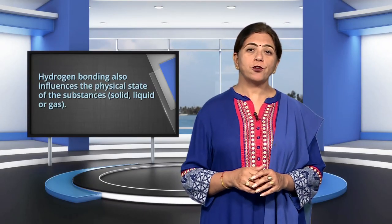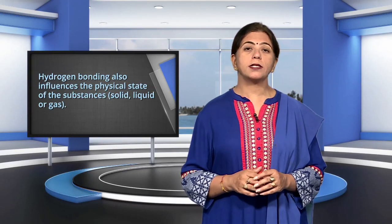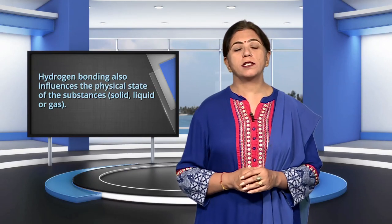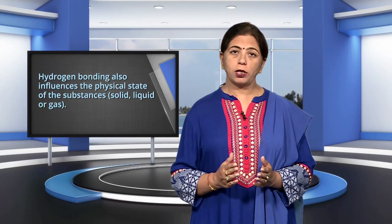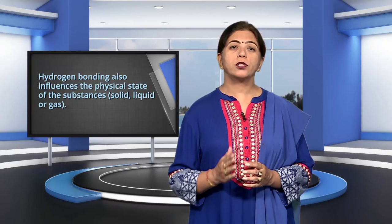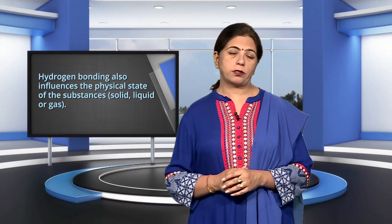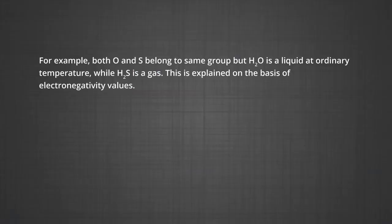The influence on the physical state: hydrogen bonding also influences the physical state of a substance — solid, liquid or gas. For example, both oxygen and sulfur belong to the same group, but water is a liquid at ordinary temperature while H₂S is a gas. This is explained on the basis of electronegativity values.